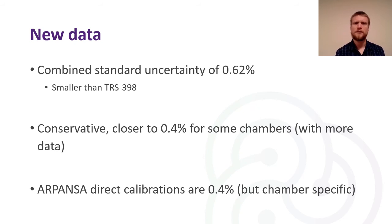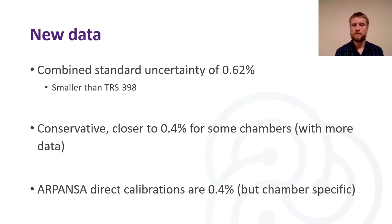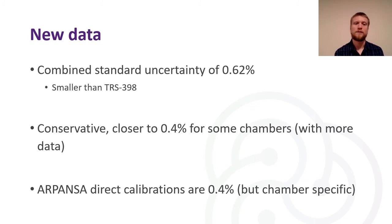This is a conservative uncertainty. We see closer to 0.4% for some chambers that have more data in the data set. The ARPANSA direct calibration standard uncertainty is 0.4%, which is lower, and very importantly the direct calibration service allows you to have KQ values generated for your specific chamber, not for a generic chamber of that type.